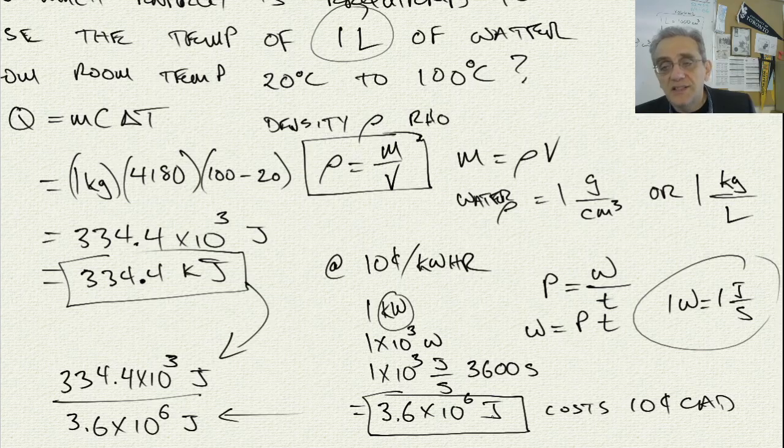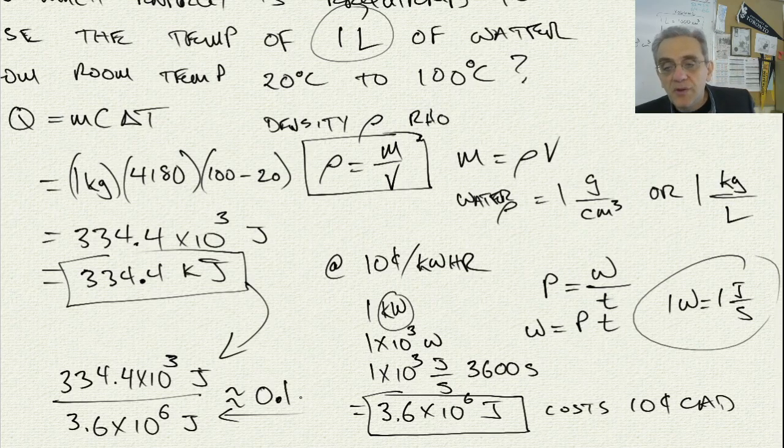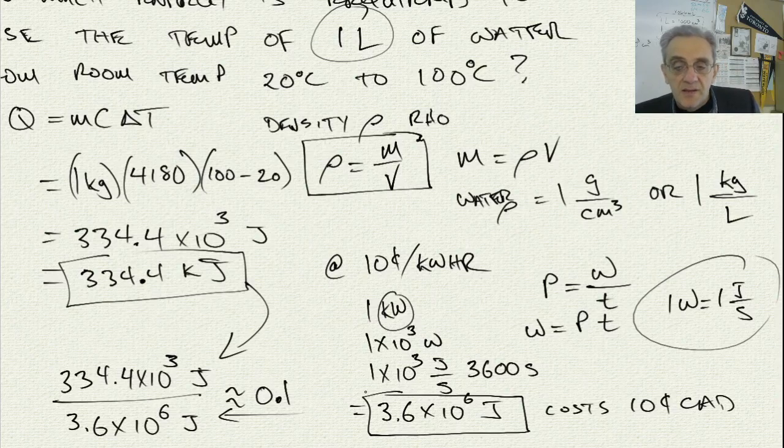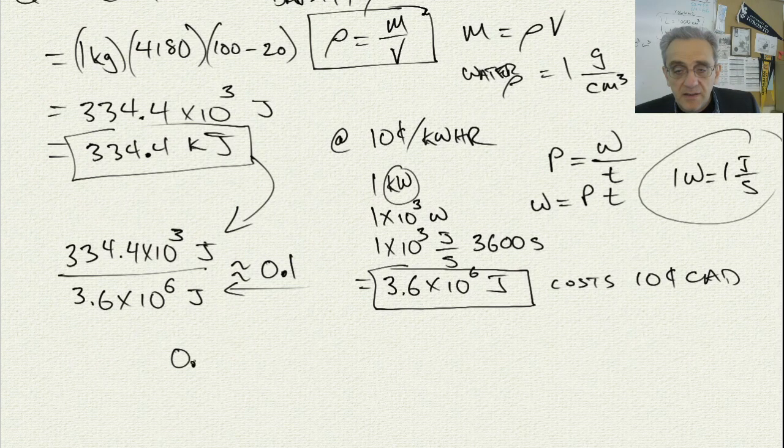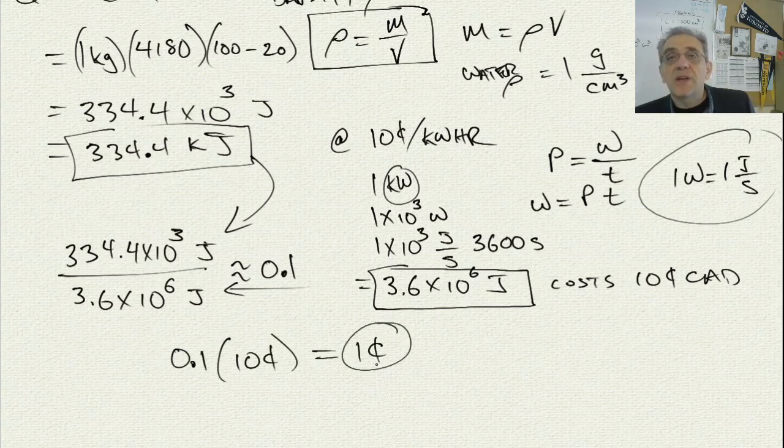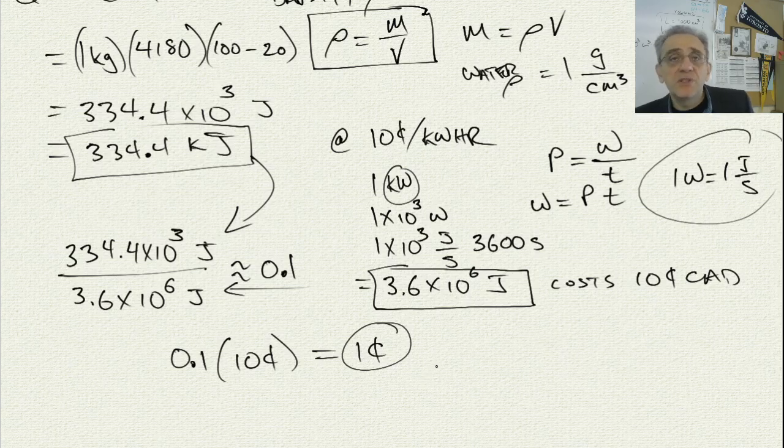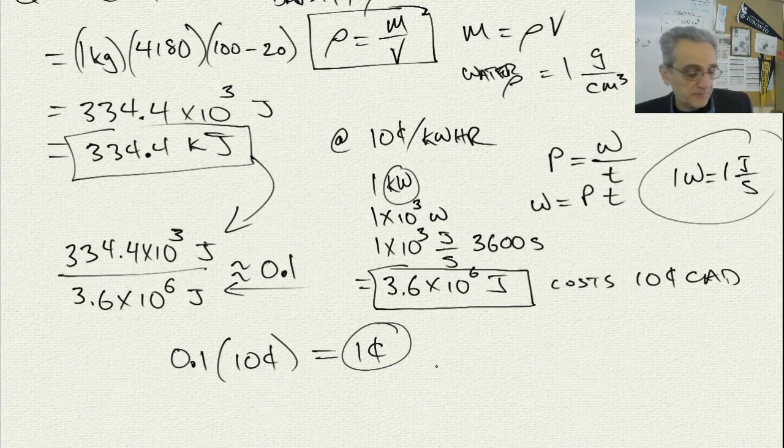And we would get approximately 0.1. That means it's 0.1 or 10% of 10 cents, which is equal to one penny. So it takes one penny worth of electricity to boil one liter of water, which is actually quite affordable.